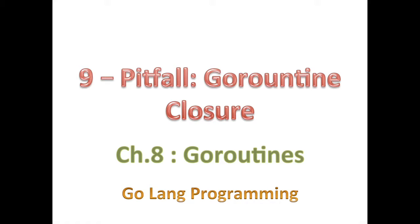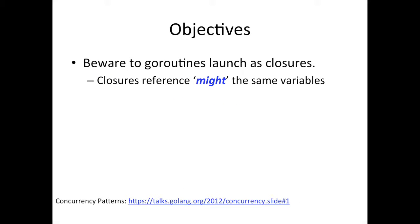We don't cover everything in this course — we introduce you to a number of topics and try to get your bearings in Go. With that said, let's look into this potential pitfall when you launch a goroutine from closures. Remember, closures are anonymous functions that have reference or access to variables in their enclosing scope.